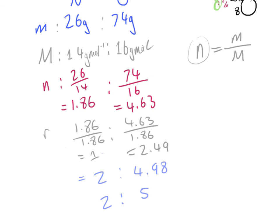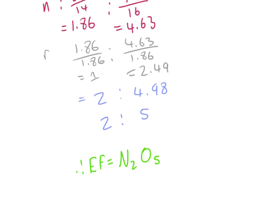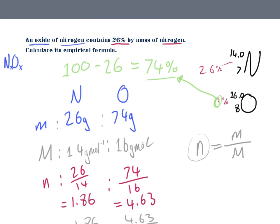Since nitrogen has ratio 2 and oxygen has ratio 5, the empirical formula equals N₂O₅. I know this is the empirical formula because you can't simplify it any further. And that's basically how you figure out the empirical formula when you've been given the mass of only one of the elements.